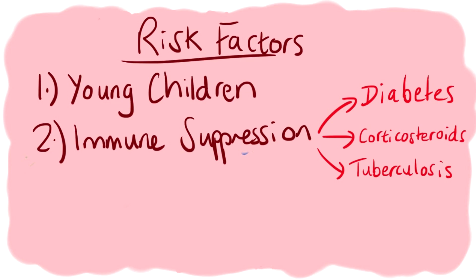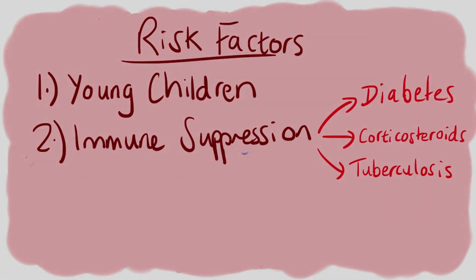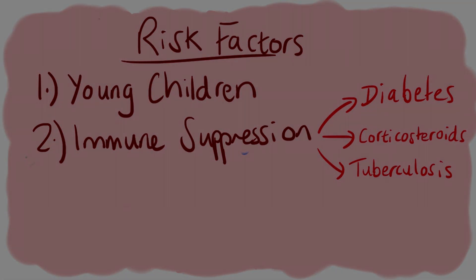In older patients, the cause of osteomyelitis is likely due to some kind of immunosuppression, meaning there is a reduced response by the body to fight off an infection. This can happen in certain diseases like diabetes, or if they're taking drugs which reduce the immune response like corticosteroids, or if the patient has another disease like tuberculosis.